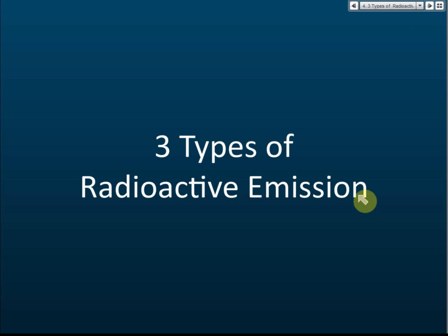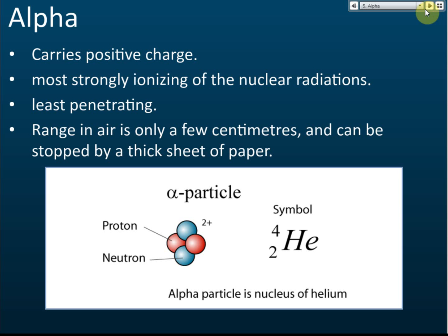There are three types of radioactive emissions. If the nucleus is unstable, it will release these three types of emissions. Some nuclei will release just one type, some another type, and sometimes two of the three can be released.